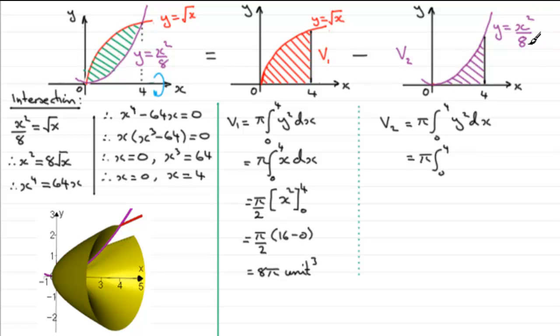So we're going to have pi integral from 0 to 4 and y squared now is going to be x to the power 4 divided by 64. I'm going to put the 64 out the front and we'll just have x to the power 4 here and we're integrating that with respect to x.